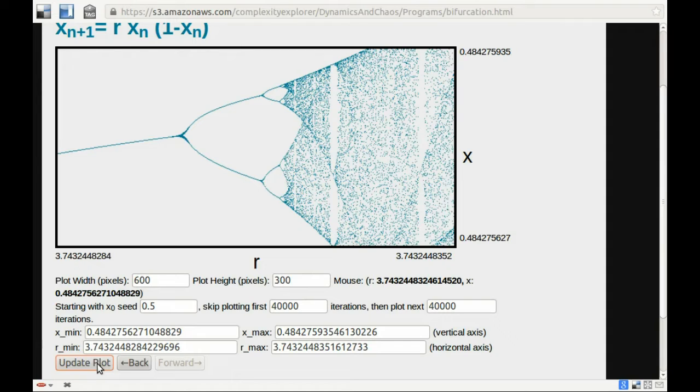And we've zoomed in a tremendous amount. So check out the difference from the range of R values that we're looking at: 3.7432448284 to 3.7432448352. So it's only in the last three digits that there's a difference here.